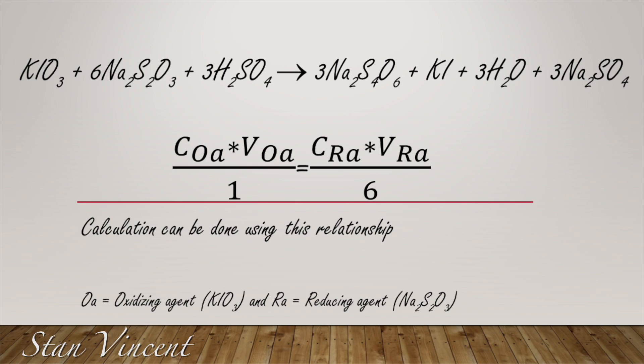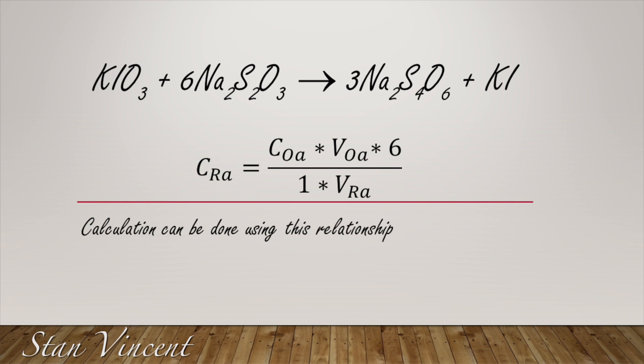We're going to use the equation: concentration of oxidizing agent times volume of oxidizing agent divided by its coefficient equals concentration of reducing agent times volume of reducing agent divided by its coefficient. This is how you calculate the concentration of the unknown reagent — in this case, the reducing agent. Rearranging, the concentration of the reducing agent equals concentration of oxidizing agent times volume of oxidizing agent times 6, divided by the volume of the reducing agent.